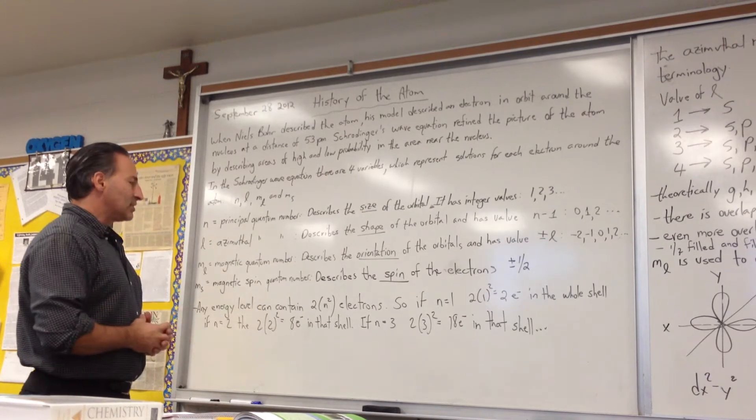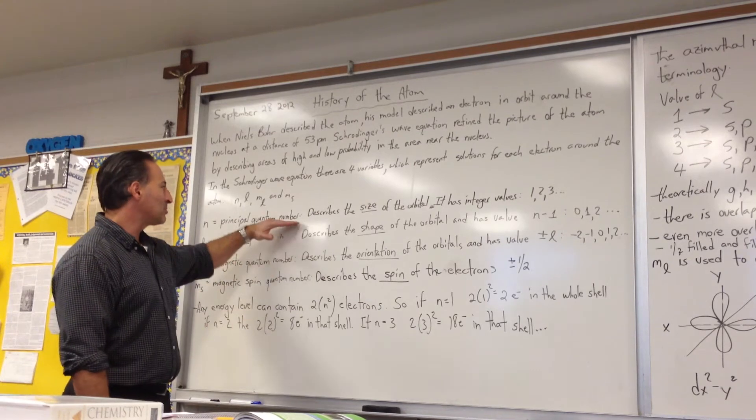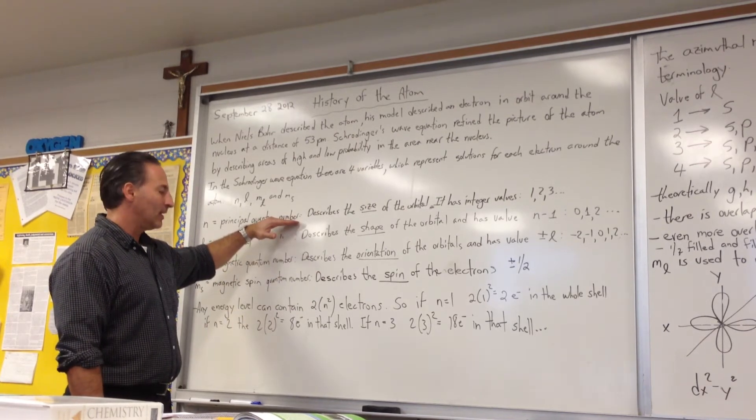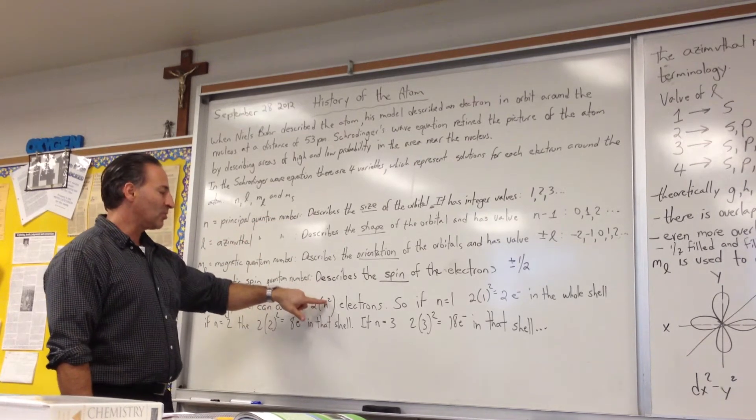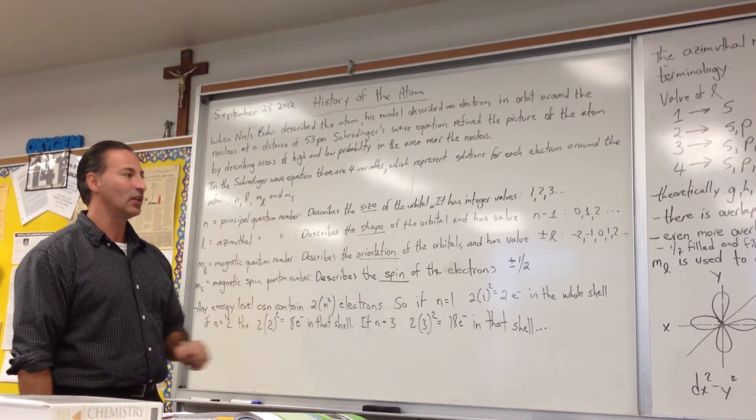Okay, so any energy level can contain two times n squared electrons. So whatever the principal quantum number that you're looking at, raise that principal quantum number by the power of two and multiply it by two.